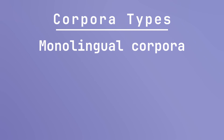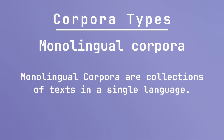There are several types of corpora used in translation studies. Monolingual corpora are collections of texts in a single language, used for studying linguistic features like vocabulary, syntax, and collocations within a language.